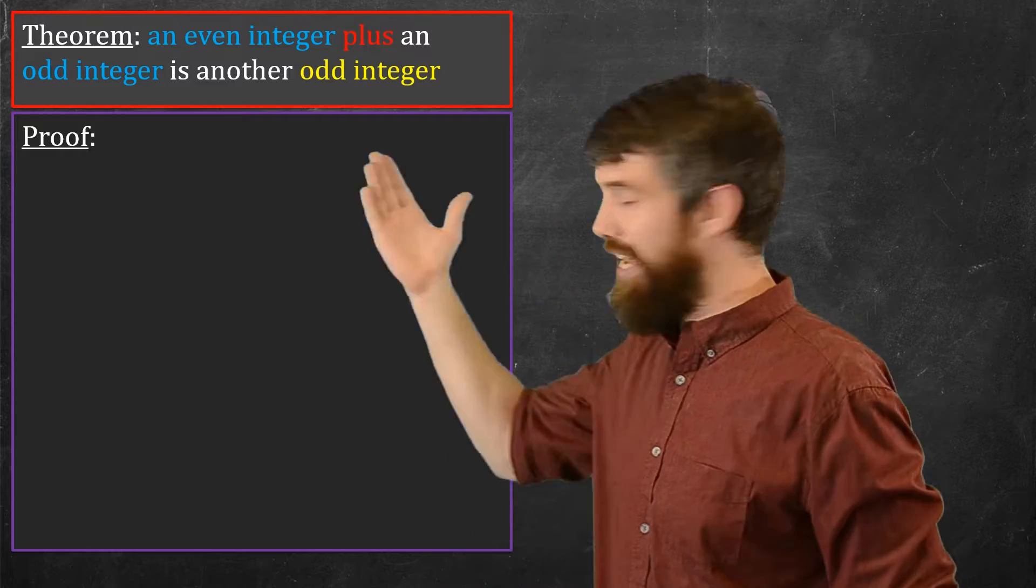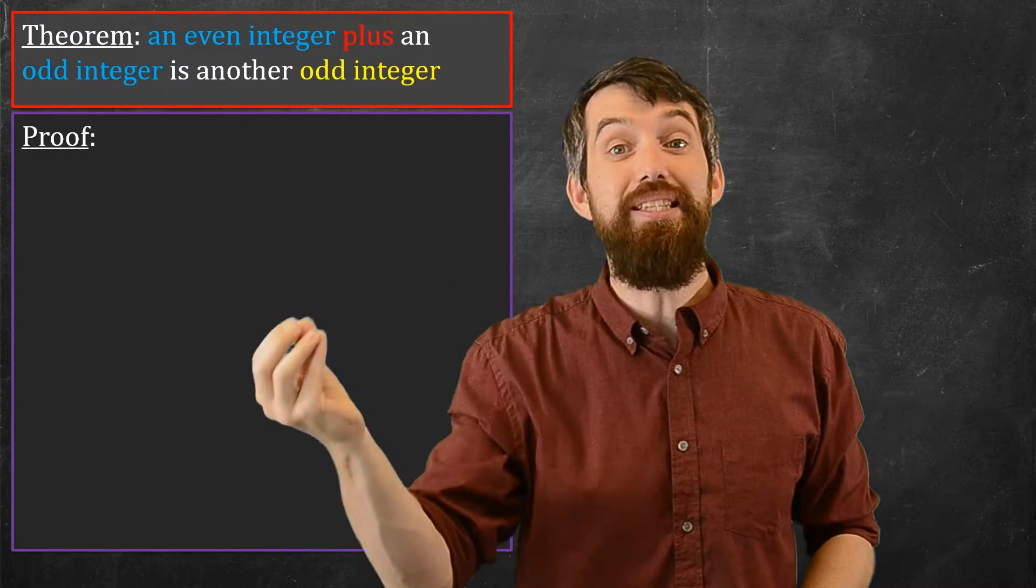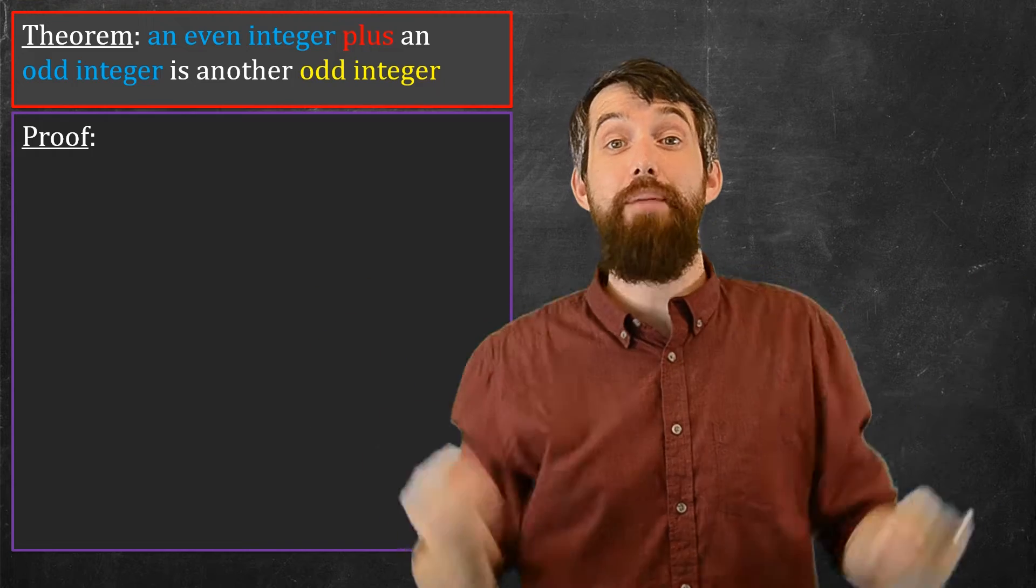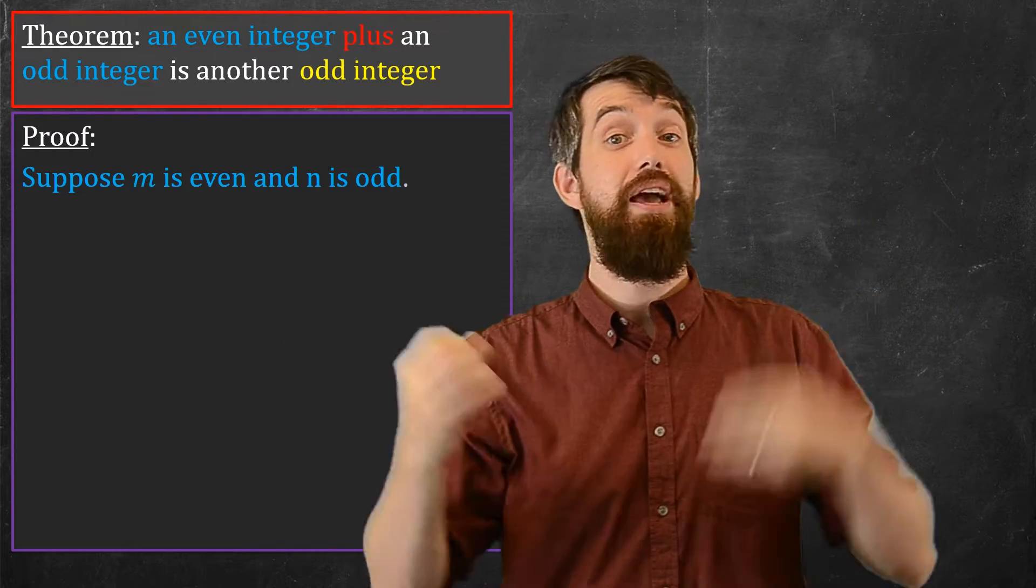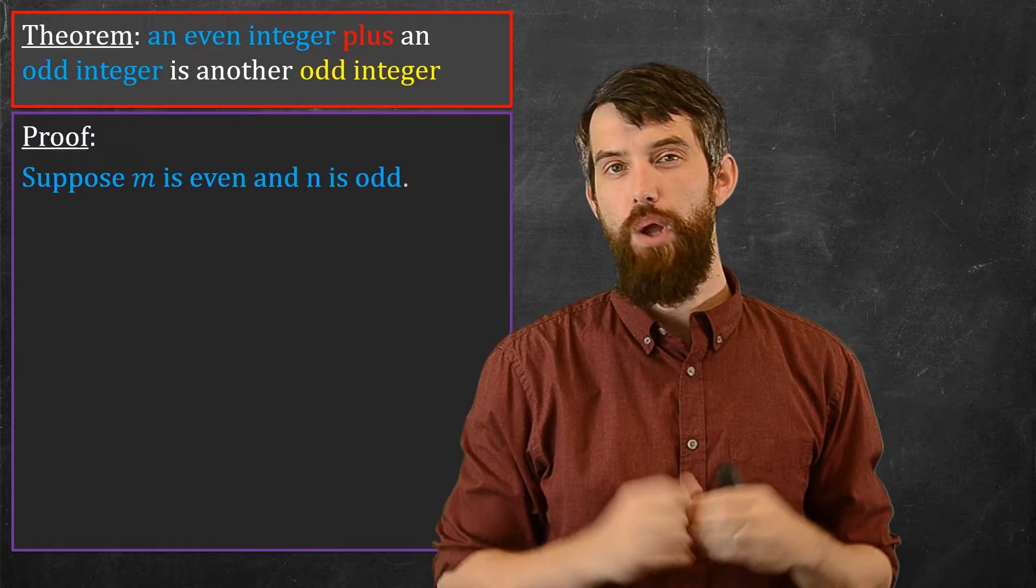So in this case, what's my assumption? It's that m is even and that n is odd, and that's what I'm going to begin with. So that's going to be my very first line of my proof. Let m be even and n be odd.